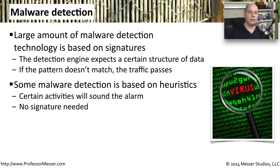Many malware detection engines use signatures, but also use technologies called heuristics. Heuristics are looking for a certain event to occur — they may be looking for a system file to be changed, and if that system file is changed, the heuristics may determine that this executable is malware. In these cases, you don't even need a signature; you're simply looking for a particular kind of event to happen.